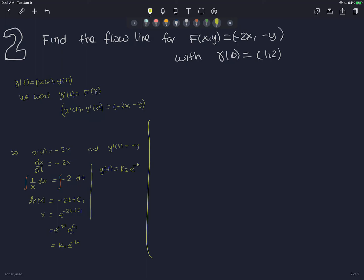So now gamma(t) is (k₁·e^(-2t), k₂·e^(-t)). And we want gamma(0) to be (1,2). So when you plug in 0 into the t's, e^0 is 1. So you need (k₁, k₂) to be (1,2).